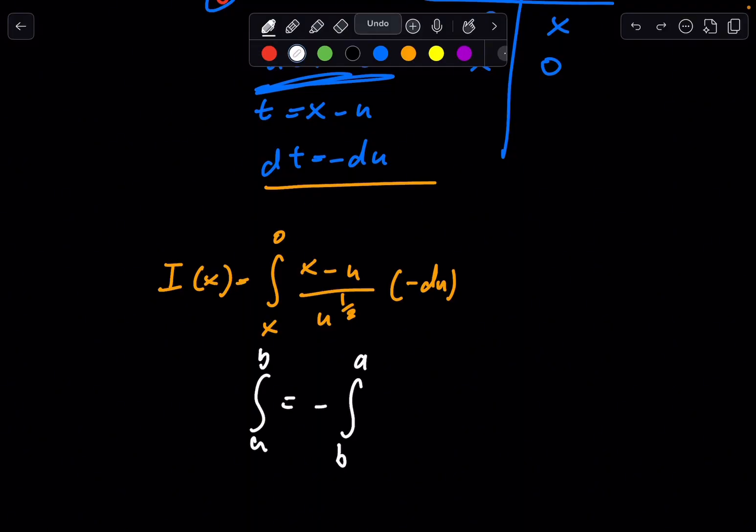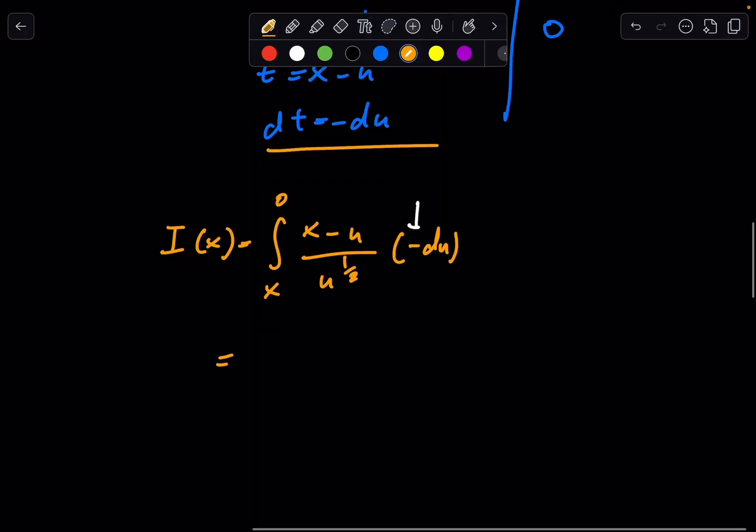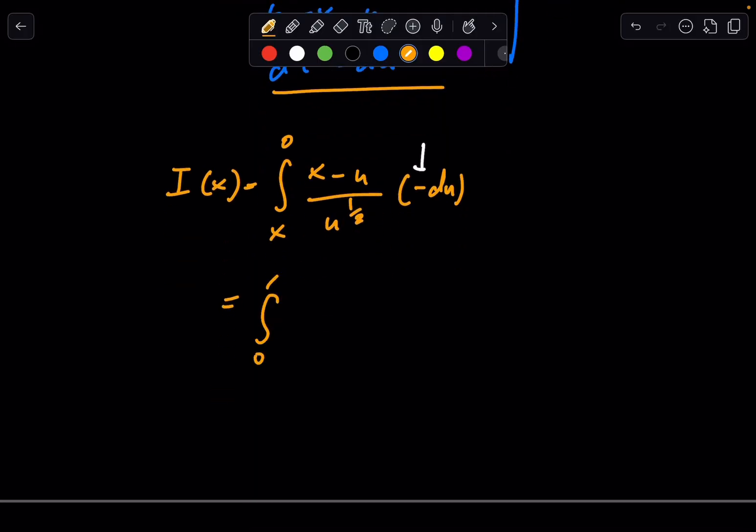The integral from a to b is equal to the negative integral from b to a. So, I can pull out a negative here, swap these, but notice that our du has a negative in front of it. So, the negative from swapping the bounds and this negative cancel. So, this gives us I(x) is equal to, simply, the integral from 0 to x of (x minus u) all over u to the 1/2 du, simply like that.